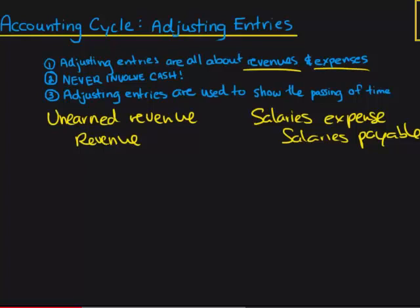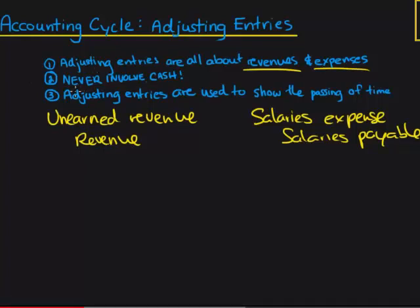The second rule is that adjusting entries never involve cash. So if you are performing an adjusting entry on a quiz or test and they ask you to write it down, and you're debiting or crediting cash, you can expect it to be wrong — because you'll never debit or credit cash for an adjusting entry.